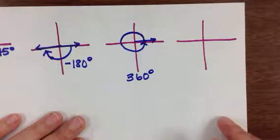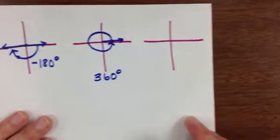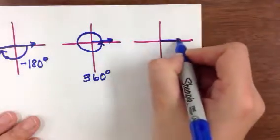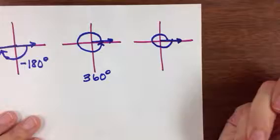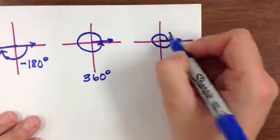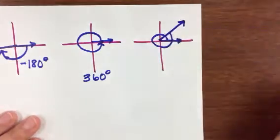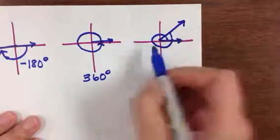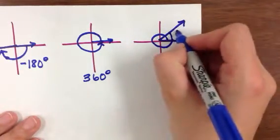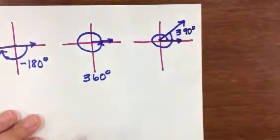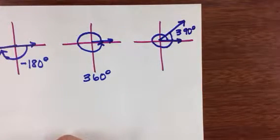What happens if I go more than a full circle? So I have my initial side and I rotate once, but then I keep going another 30 degrees, let's say. Now I will be at, I had already gone 360 plus another 30 degrees, so now I'm at 390 degrees.